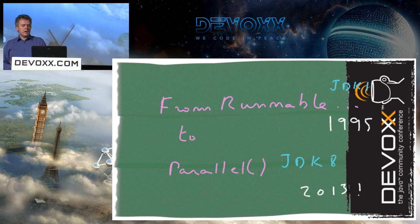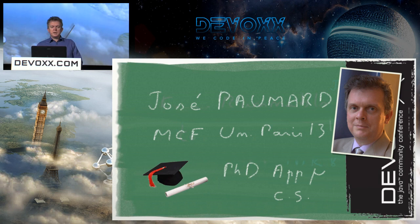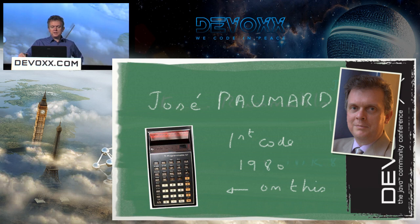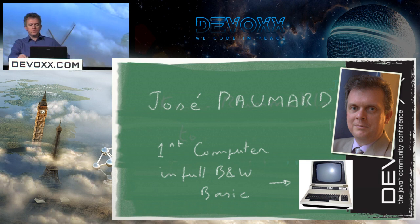I want to understand where we were 20 years ago, understand the different steps through the history, and where we are going in the next few years. I am José Pomar, an assistant professor at the University of Paris 13. I made a PhD in Applied Math and Computer Science quite a long time ago. I'm also an open source developer in the Java ecosystem and I work as an independent. This is the first calculator I've ever programmed — it was in 1980, it doesn't work anymore. And this is the first computer I programmed; it had 16 kilobytes of memory, which was at that time a lot. It was black and green, because at that time black and white didn't exist.